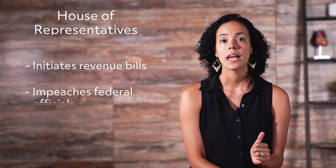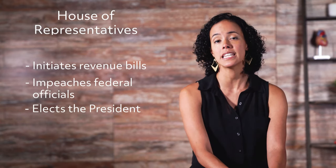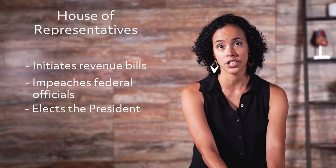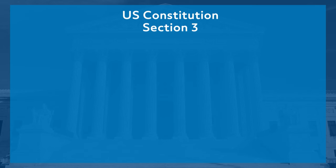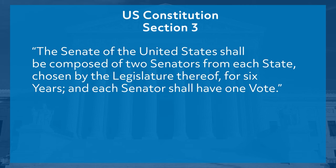The House of Representatives has several powers, including the power to initiate revenue bills, impeach federal officials, and elect the president in the case of an Electoral College tie. Section 3 of the Constitution details the Senate: 'The Senate of the United States shall be composed of two senators from each state chosen by the legislature thereof for six years, and each senator shall have one vote.' Note that this clause has been modified by the 17th Amendment, which changed the election method from state legislatures to popular vote.